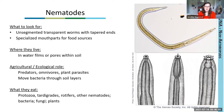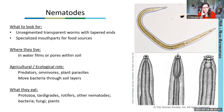Next up are nematodes. We're getting a little larger in body size now, but many nematodes are still microscopic and many also live in water films, although some live in soil pores too. Nematodes are unsegmented transparent worms with tapered ends and specialized mouthparts for different food sources. One nematode type is a bacterial feeder; another has piercing sucking mouthparts to feed on fungi or plant roots; and another has teeth and is a predator, hunting tardigrades, rotifers, or other nematodes.